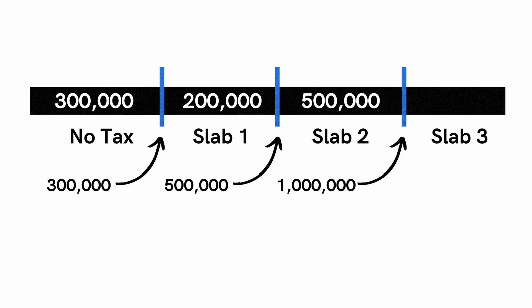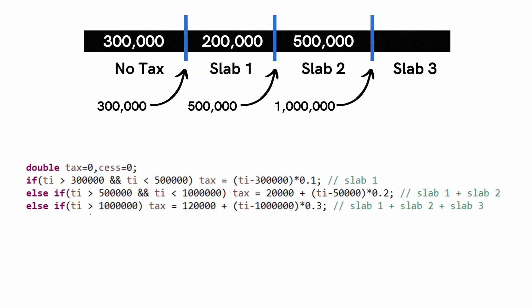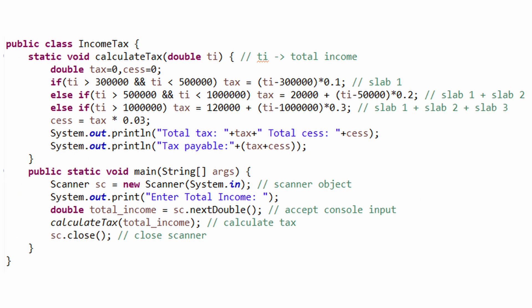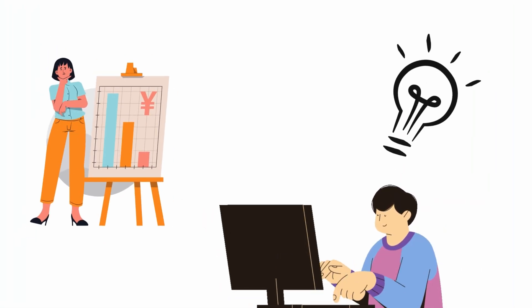The above code can be simplified to fewer lines based on a simple fact: if the taxable income lies beyond 300,000 and is also beyond 500,000, then the taxable income in slab one will always be 200,000. So we can say that for any income lying in slab three or beyond, they will have to pay taxes for slab one and slab two as fixed amounts. Take a look at the simplified code, which gives the same result as before.